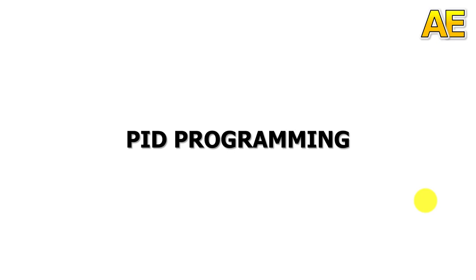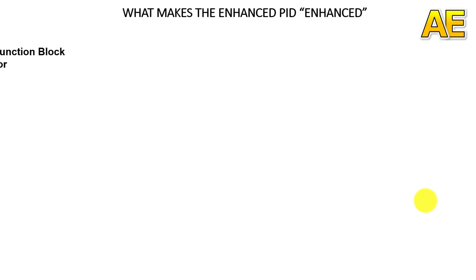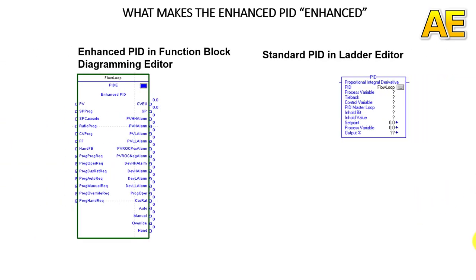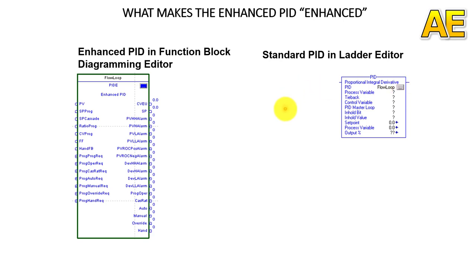We have 2 types of PID block. The first is standard PID and the second is enhanced PID (PIDE). The first difference between them is the algorithm. The standard PID is position-based and the enhanced PID is velocity-based.